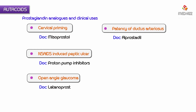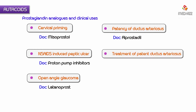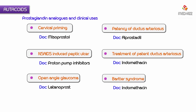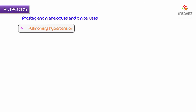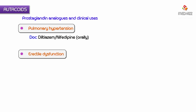For the treatment of patent ductus arteriosus, the drug of choice is indomethacin. For Bartter syndrome, the drug of choice is also indomethacin. For pulmonary hypertension, the drug of choice is either oral diltiazem or nifedipine. For erectile dysfunction, the drug of choice is sildenafil.